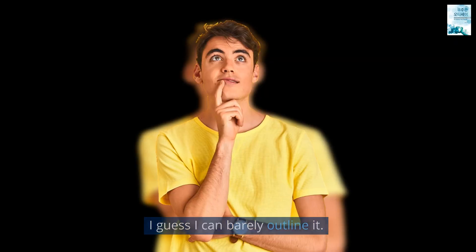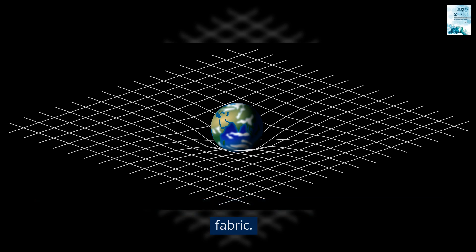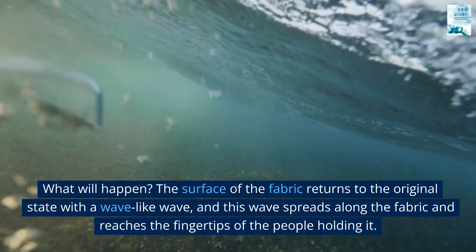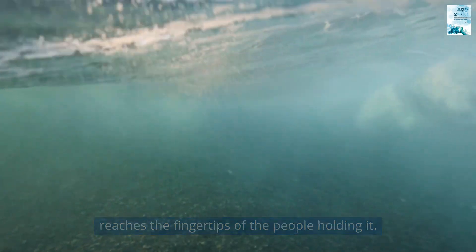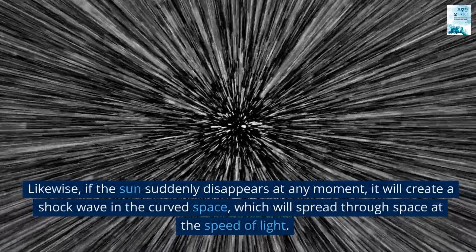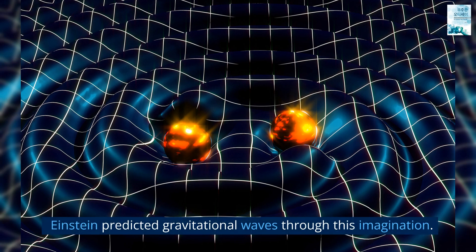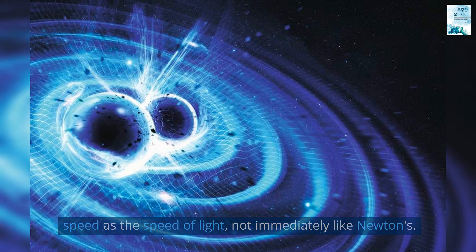I guess I can barely outline it. Now imagine that you suddenly remove the bowling ball from the fabric. What will happen? The surface of the fabric returns to the original state with a wave-like wave, and this wave spreads along the fabric and reaches the fingertips of the people holding it. Likewise, if the sun suddenly disappears at any moment, it will create a shock wave in the curved space, which will spread through space at the speed of light. Einstein predicted gravitational waves through this imagination. He predicted that the gravitational waves would propagate at the same speed as the speed of light, not immediately like Newton's.